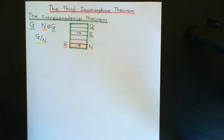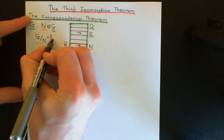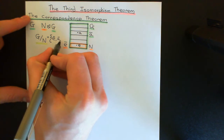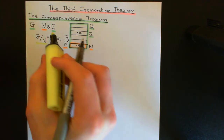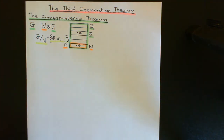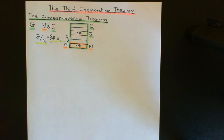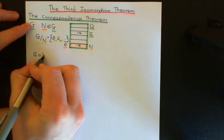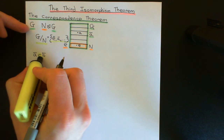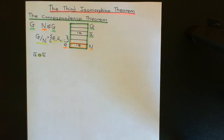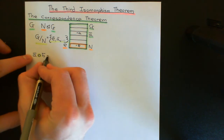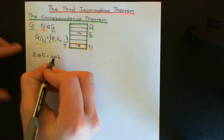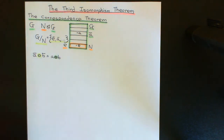How do we define composition of two cosets A-bar and B-bar in a quotient group? You take a representative from each coset — say A and B — compose them in the initial group, and take the coset that contains the answer. So A-bar composed with B-bar equals the coset containing A composed with B. One thing proved in the video on quotient groups is that this is well-defined: whatever representatives you pick, you get the same resulting coset.